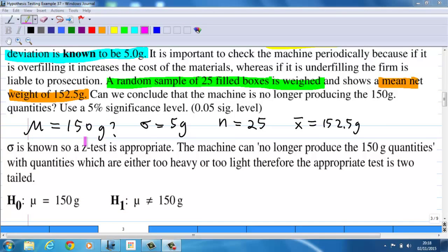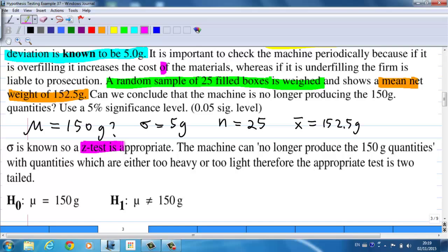Since sigma is known, a z-test is appropriate. The machine can no longer produce the 150 gram quantities, which are either too heavy or too light. Therefore, the appropriate test is the two-tail test with null hypothesis H0 stating that mu equal to 150 grams, and alternative hypothesis H1 states that mu not equal to 150 grams.